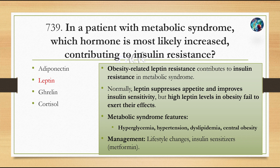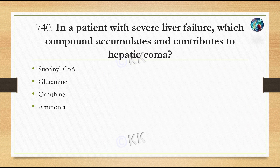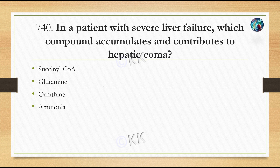In a patient with severe liver failure, which compound accumulates and contributes to hepatic coma? Option A, succinyl-CoA. Option B, glutamine. Option C, ornithine. Option D, ammonia. The correct option is Option D, ammonia. Liver failure leads to ammonia accumulation and ammonia toxicity, causing neurotransmitter dysfunction, altered consciousness, asterixis, and coma — known as hepatic encephalopathy. Treatment includes lactulose.